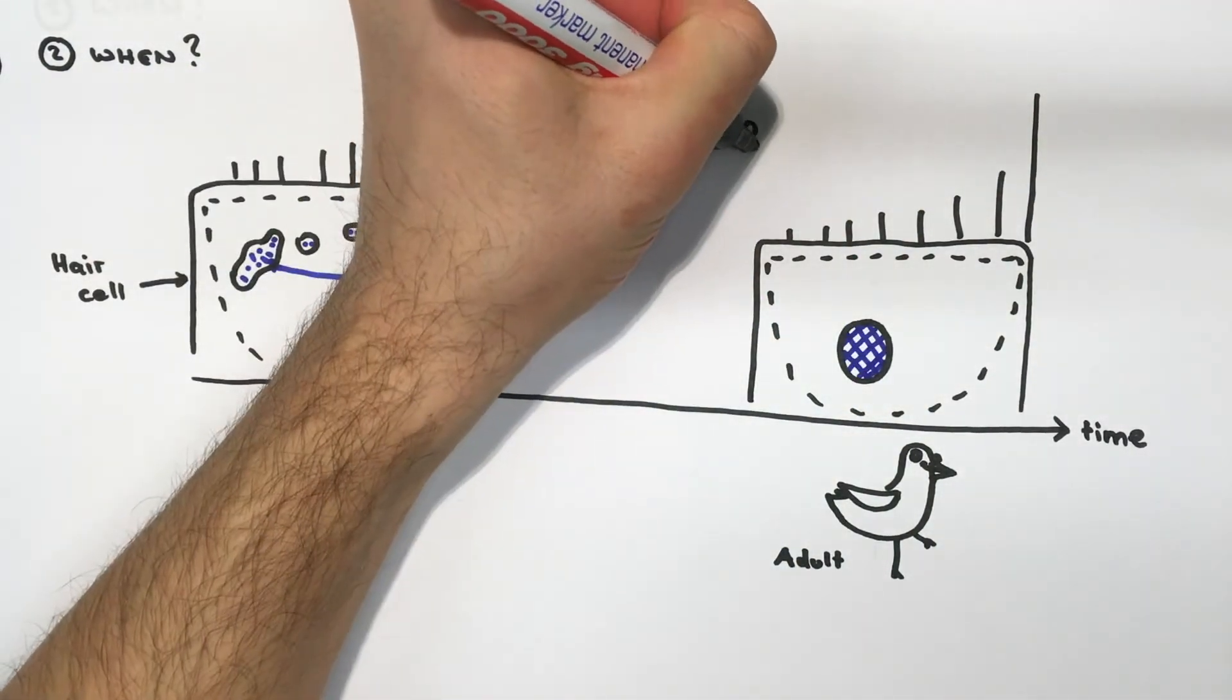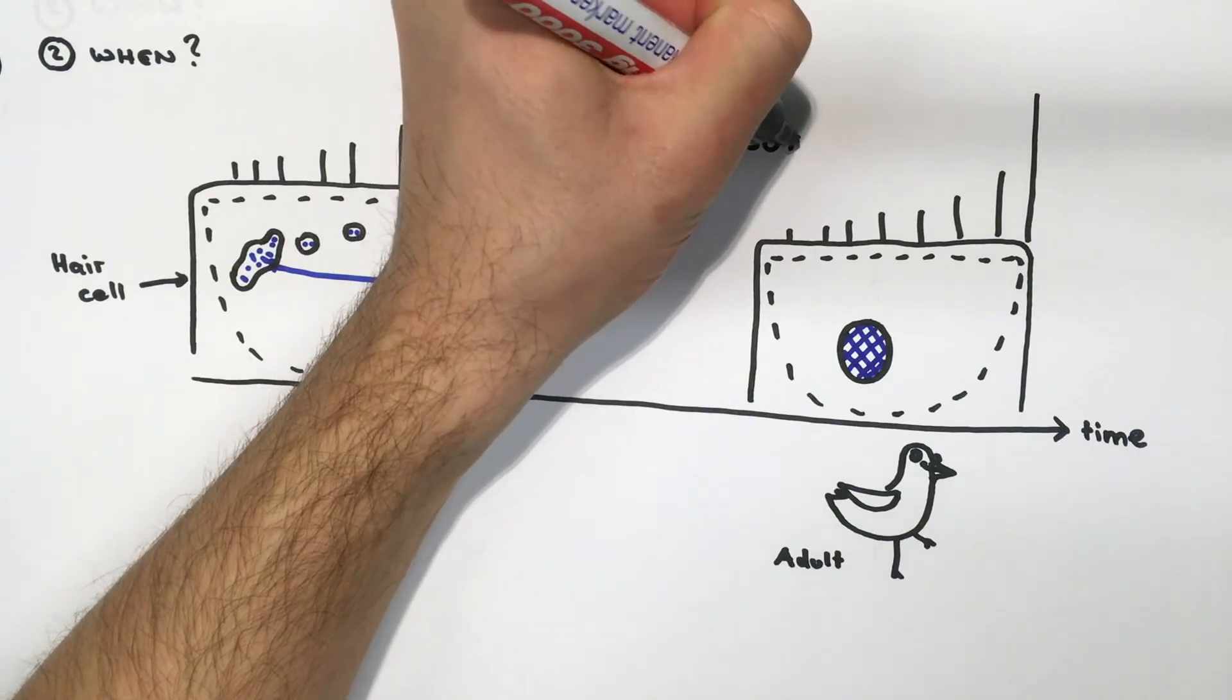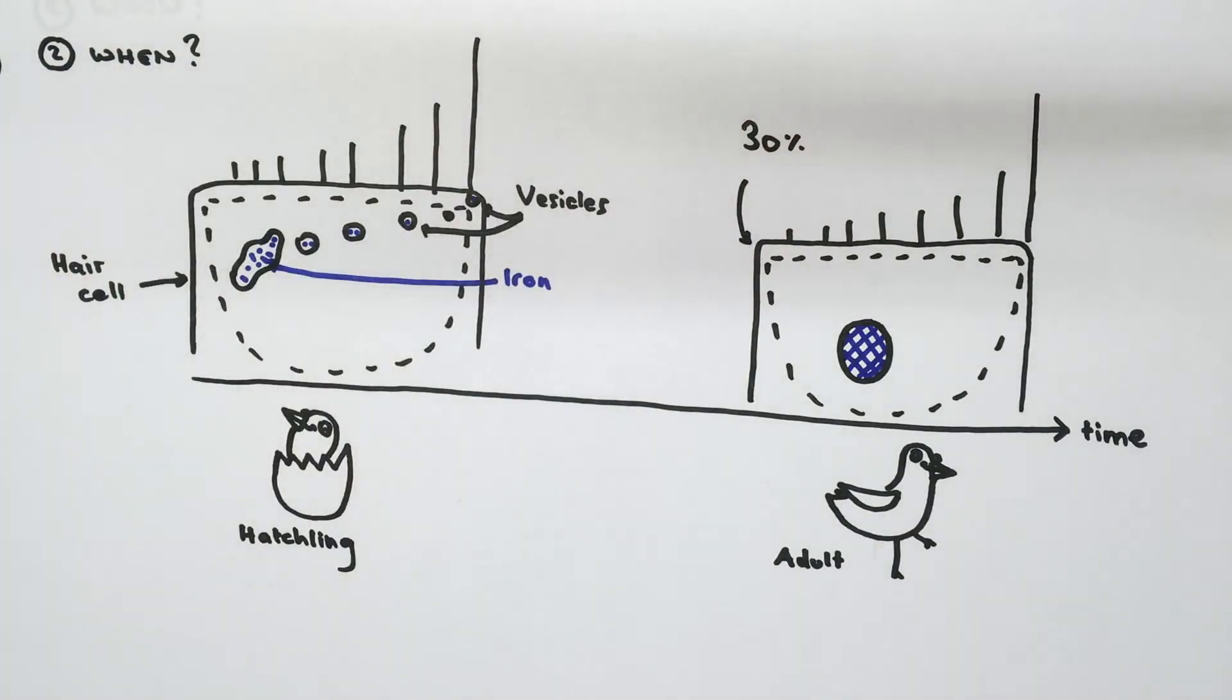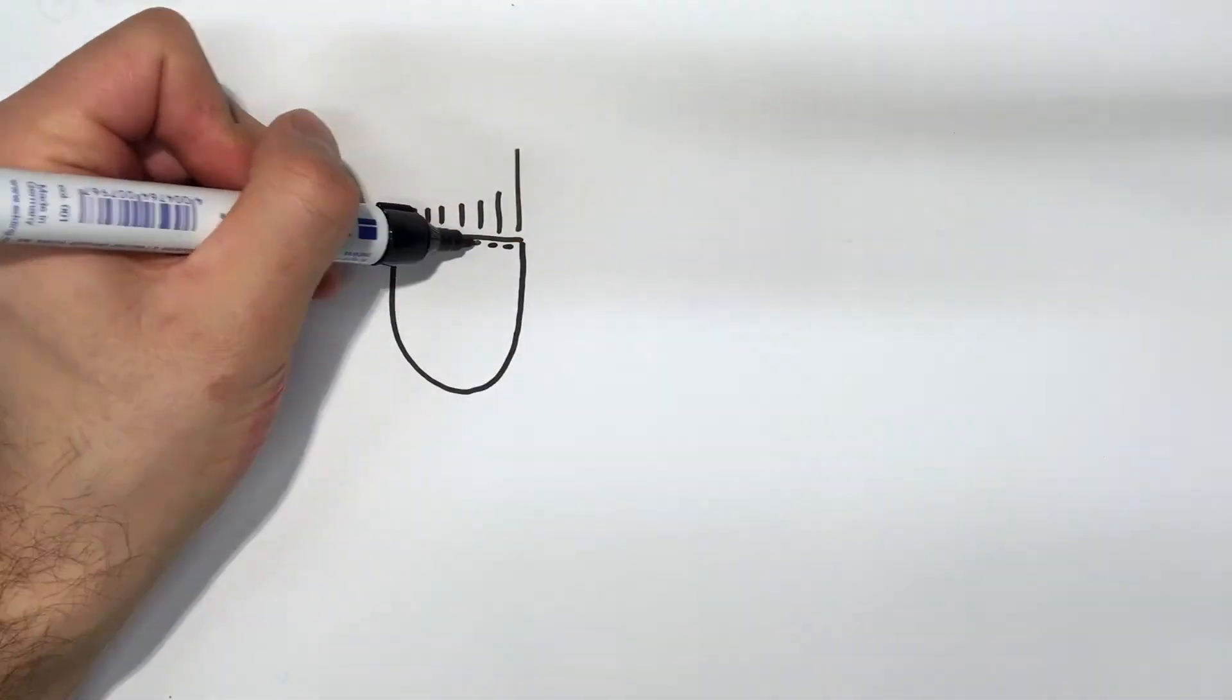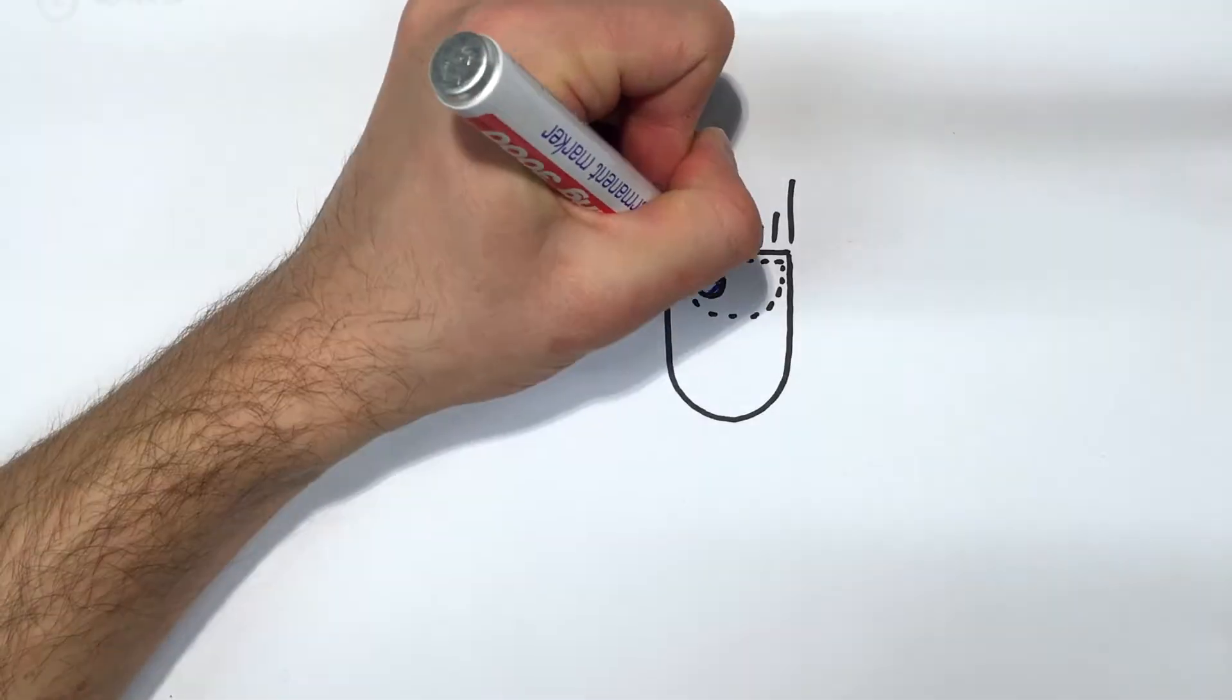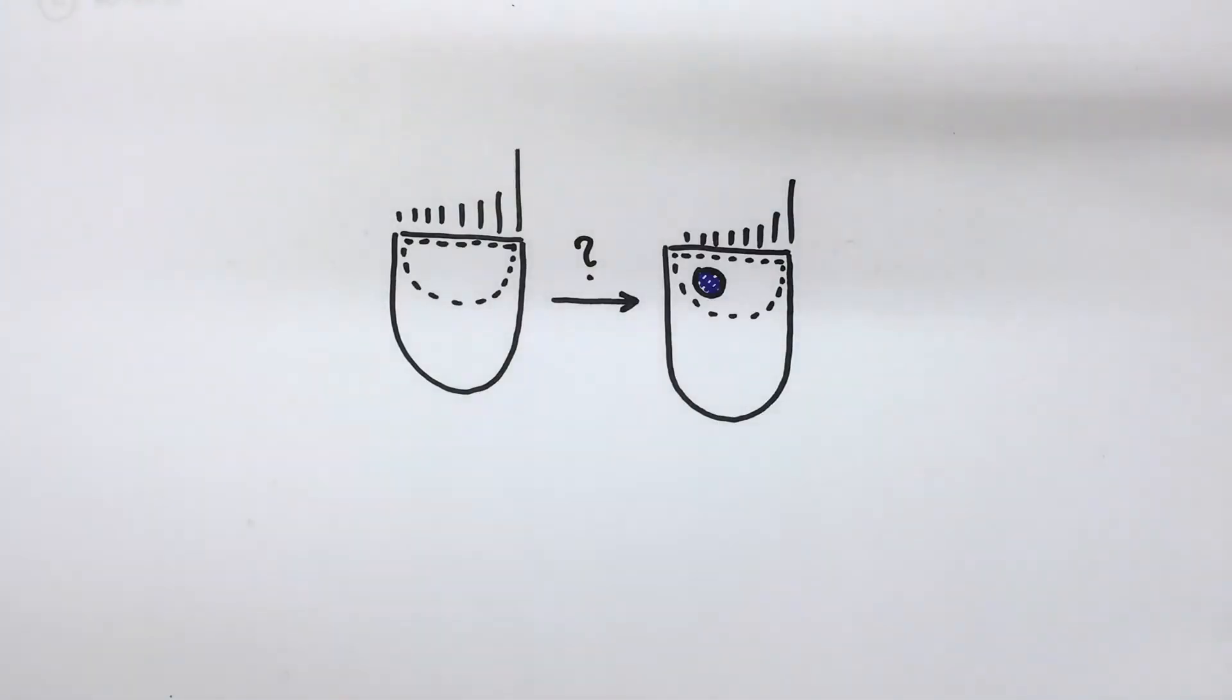In adult pigeons, almost 30% of all hair cells harbor cuticulosomes. This brings up the question, why some hair cells don't produce cuticulosomes and others do? Is there a genetic machinery responsible for the generation of these organelles?